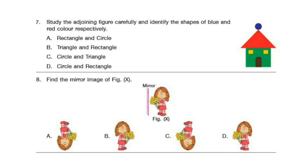Question 7. Study the adjoining figure carefully and identify the shapes of blue and red color respectively. The correct answer is option C: circle and triangle.